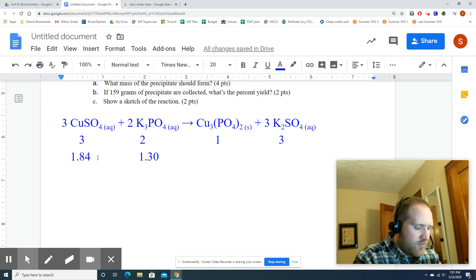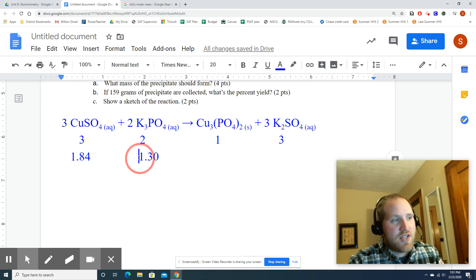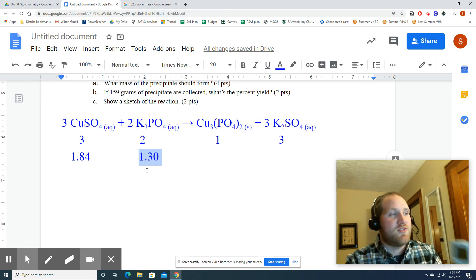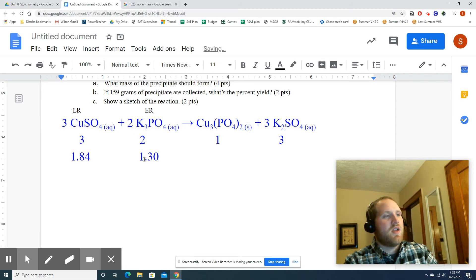All right. So this one, 1.84 divided by 3 gives me 0.613. So 0.613. I'll just remember that, 0.613. Because this, I can do in my head. 1.30 divided by 2 is 0.65. So I have 0.61 and 0.65. The smaller number is this one, which means this is my LR, which makes that my ER.